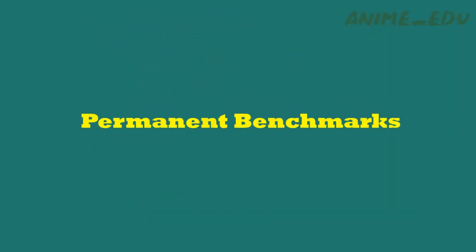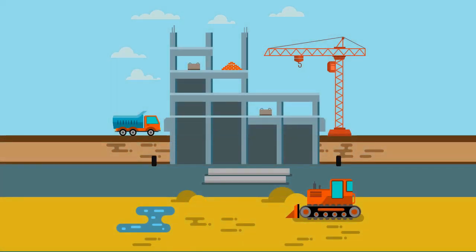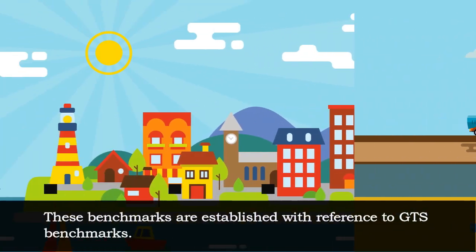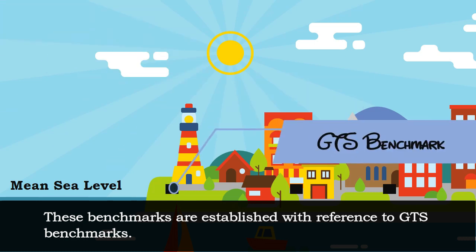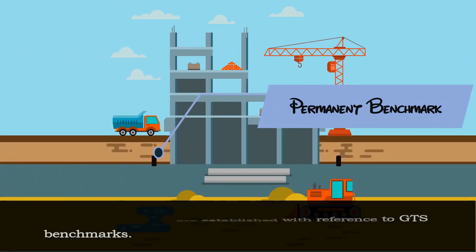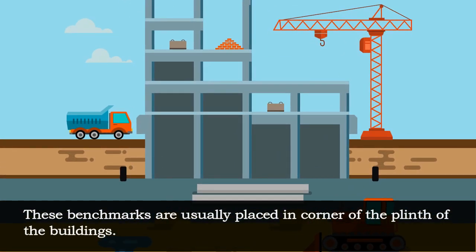Permanent Benchmark — these are the benchmarks established by the state government agencies like PWD. These benchmarks are established with reference to GTS Benchmarks and are usually placed in the corner of the plinth of the buildings.